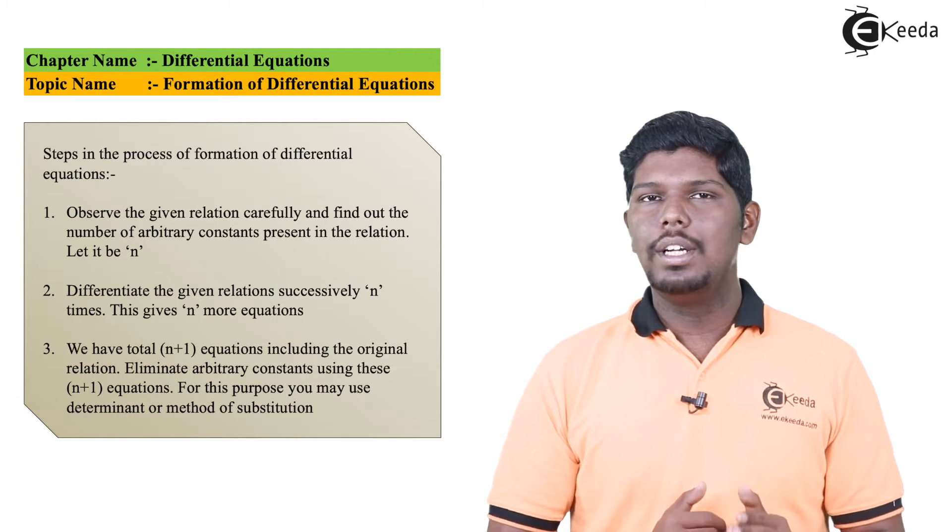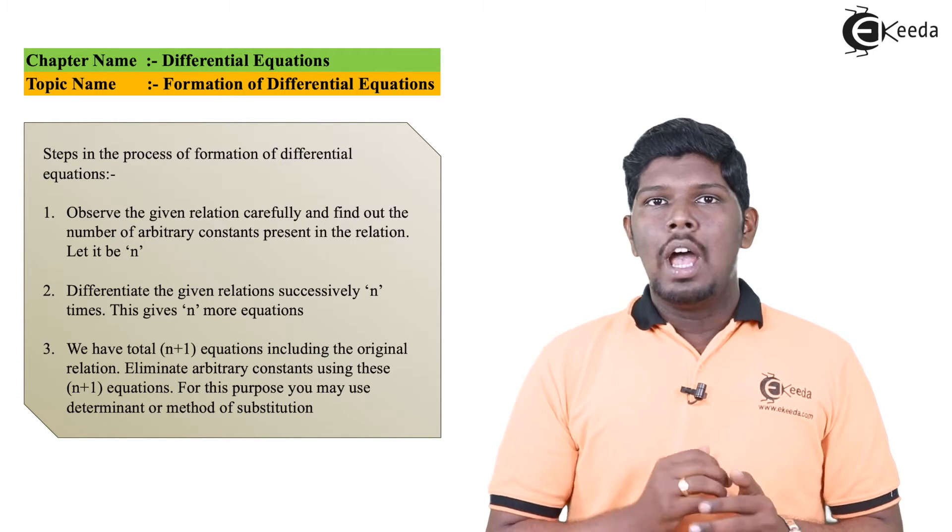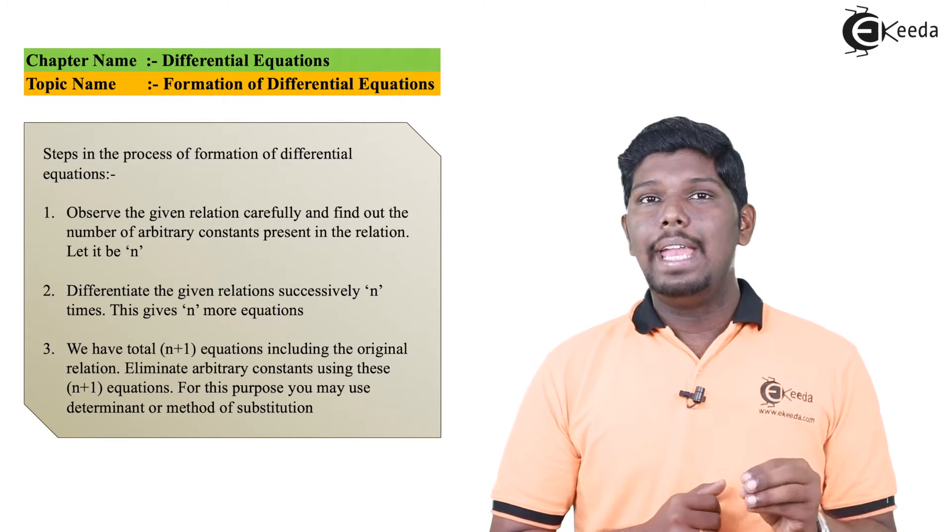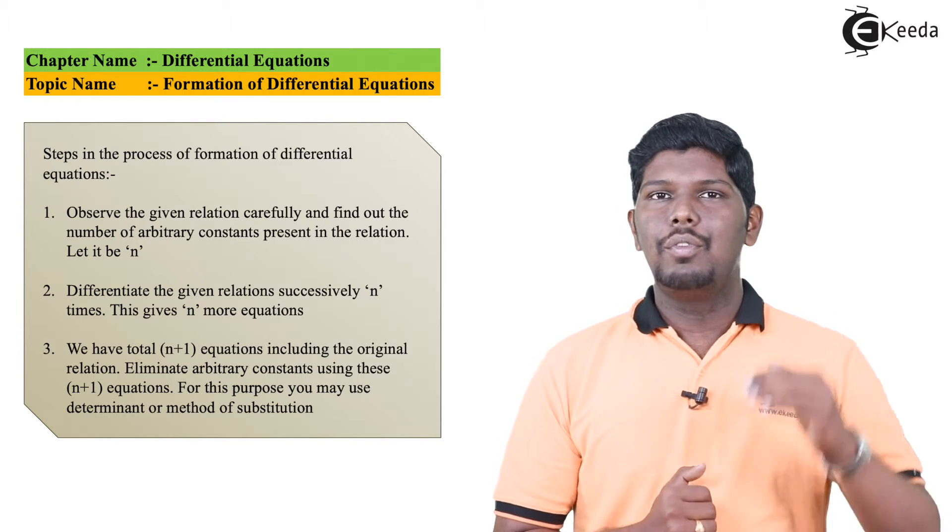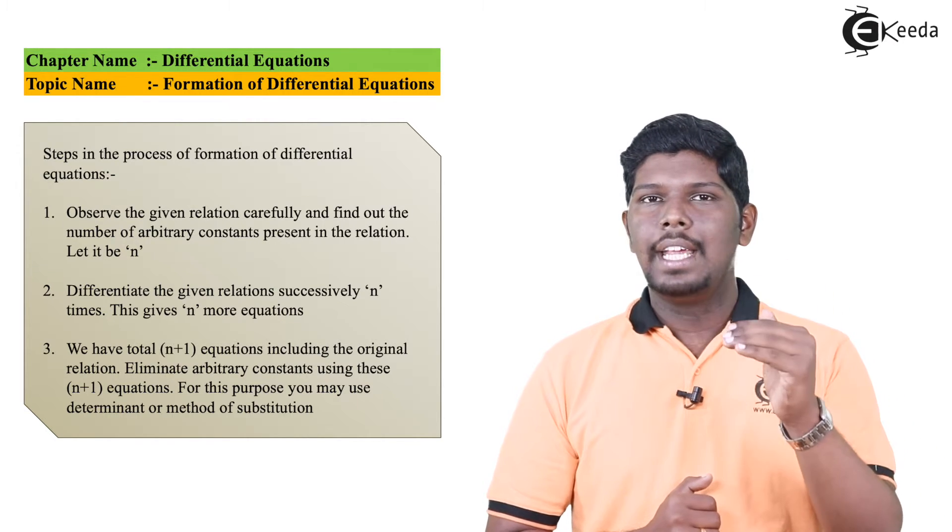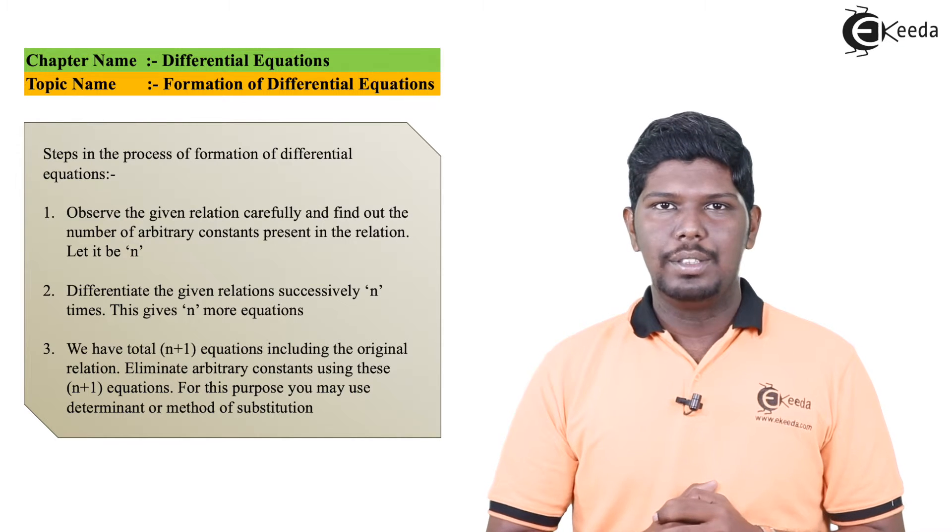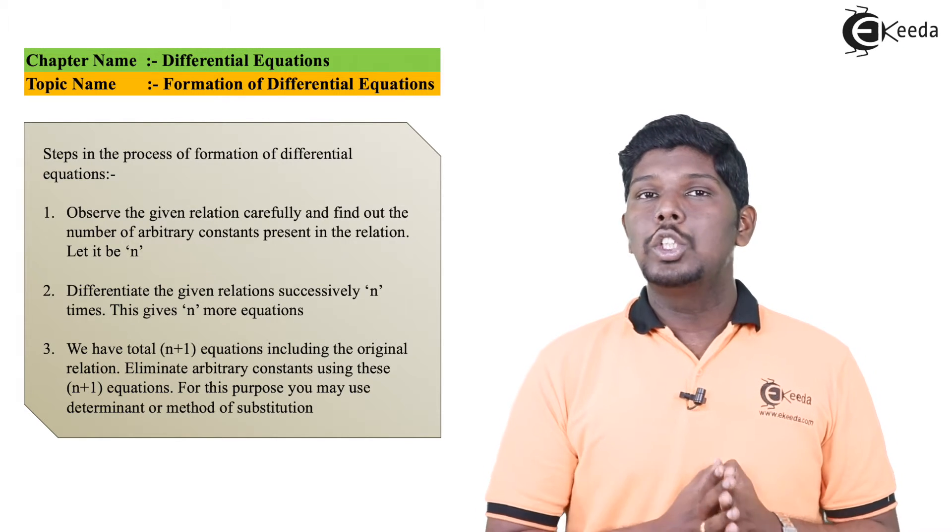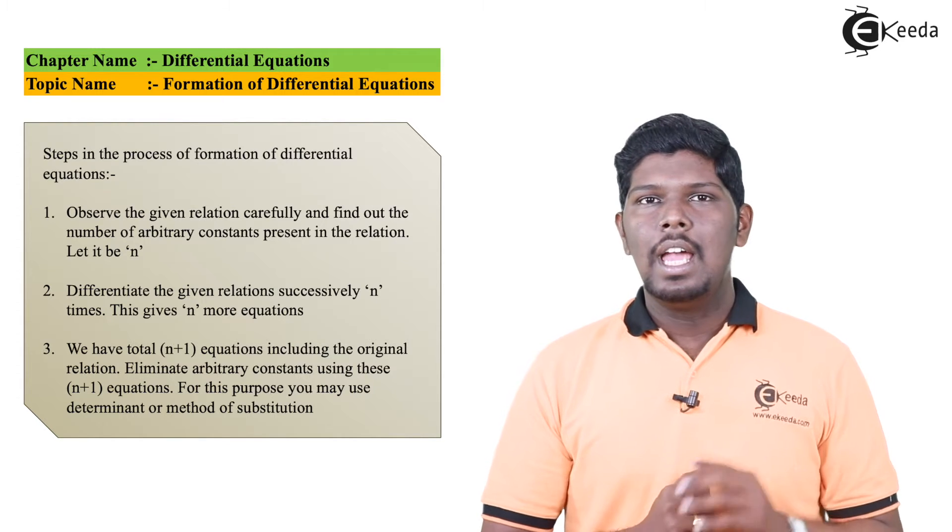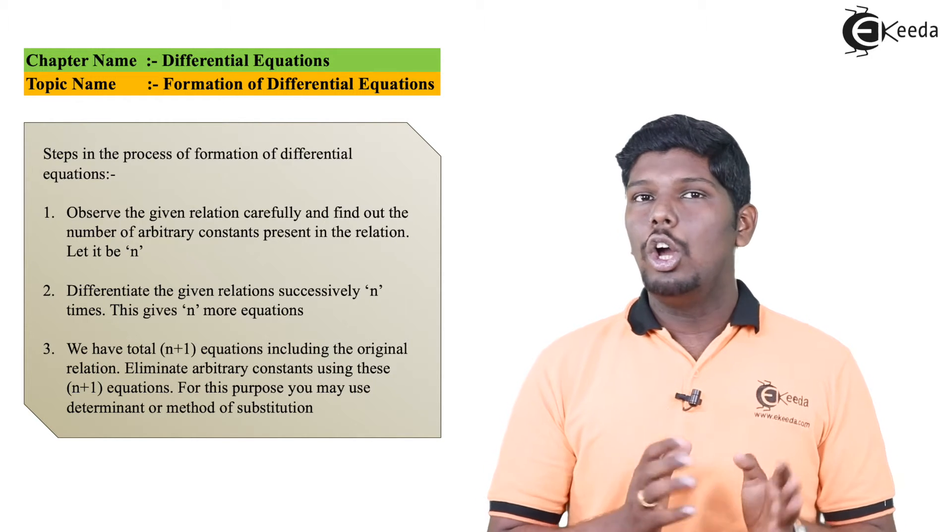So if we have two arbitrary constants, we'll go for second order derivative. If we have one arbitrary constant, we'll go for only first derivative. After doing so we will have total n plus one different types of expressions: first is the original function and second will be number of derivatives. Now to eliminate this arbitrary constant, you can solve this n plus one expressions either by substitution method or you can use the determinant method.